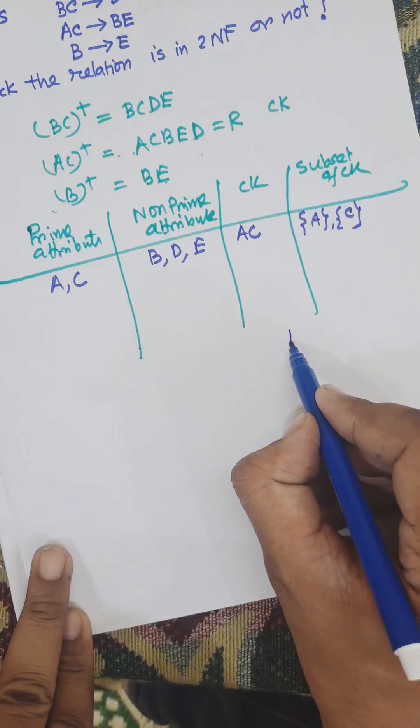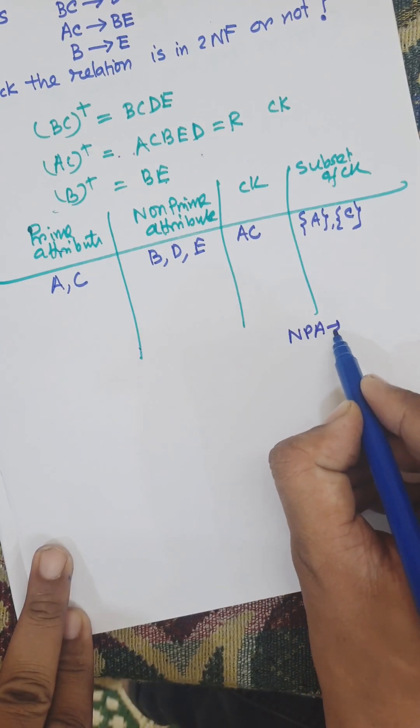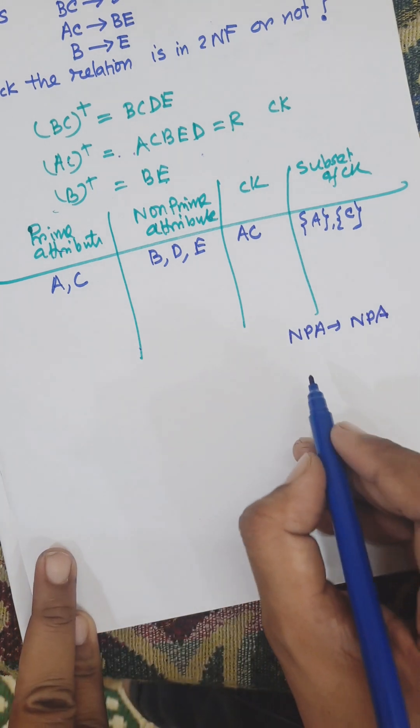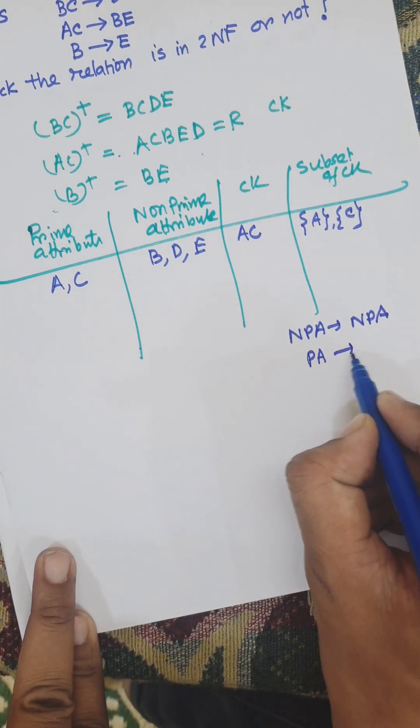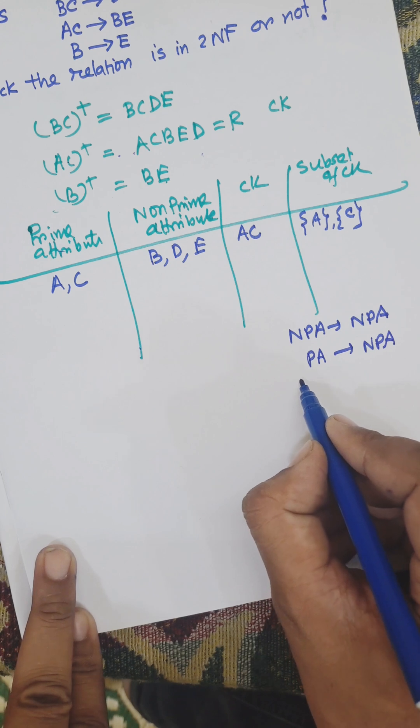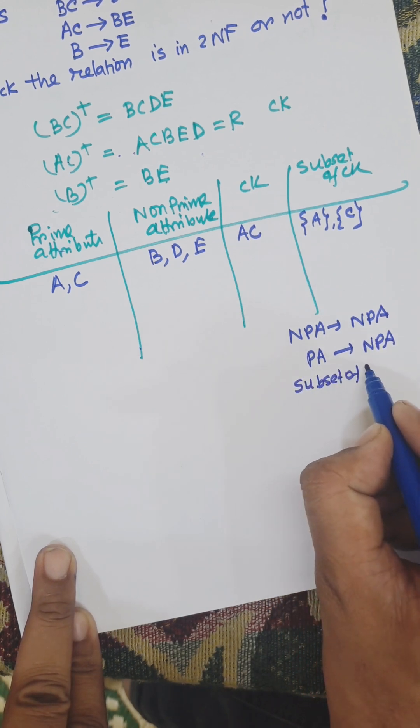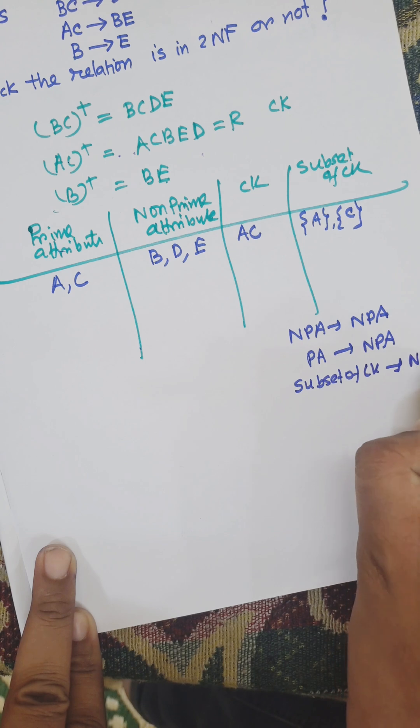For 2NF rules: NPA→NPA is no problem, and PA→NPA is no problem. But subset of CK→NPA is a problem.